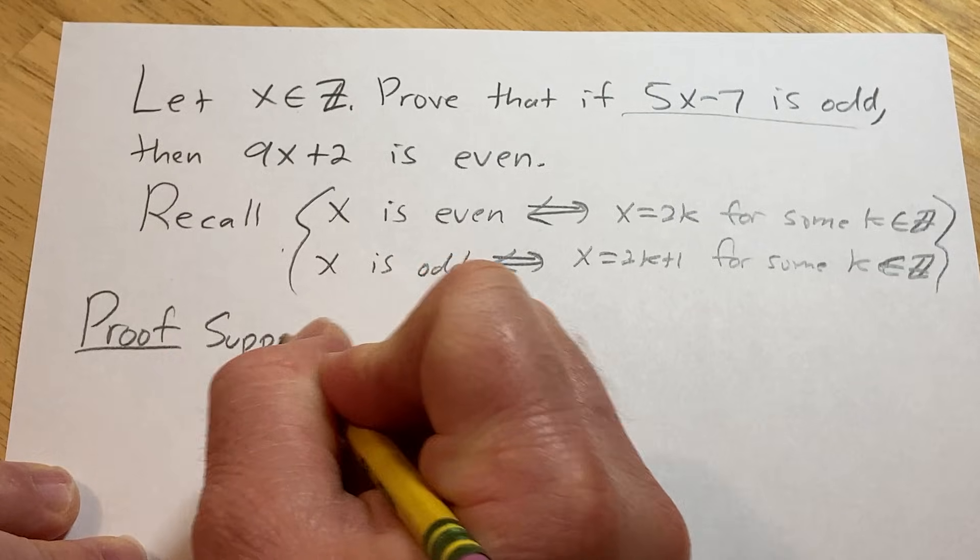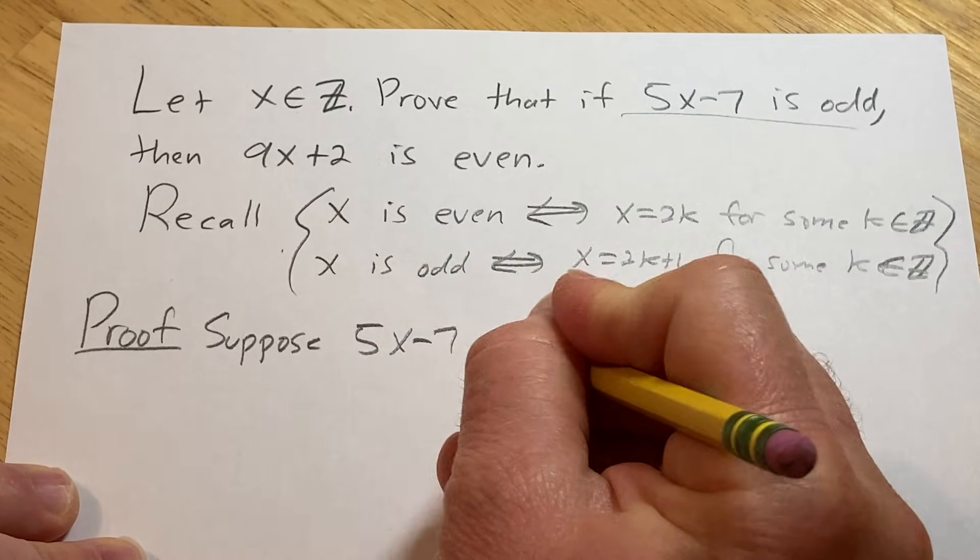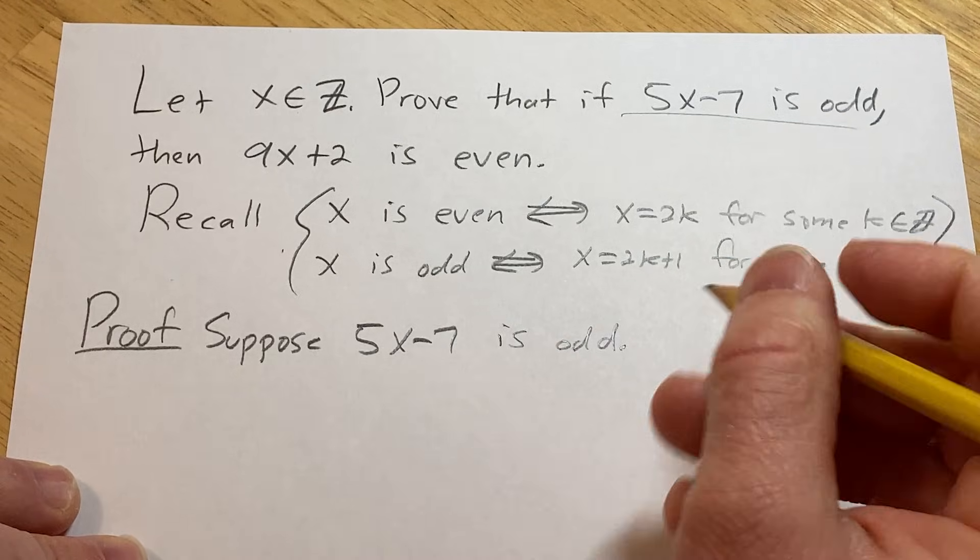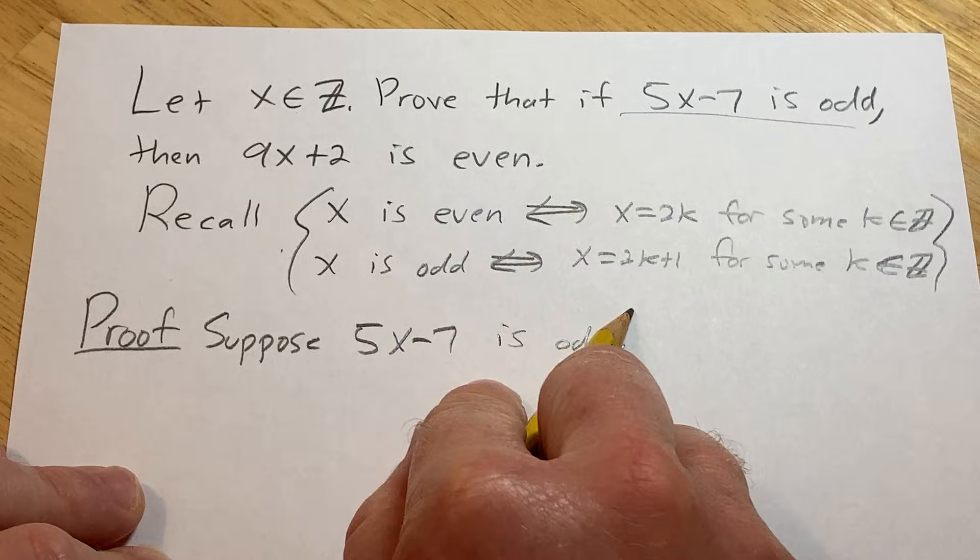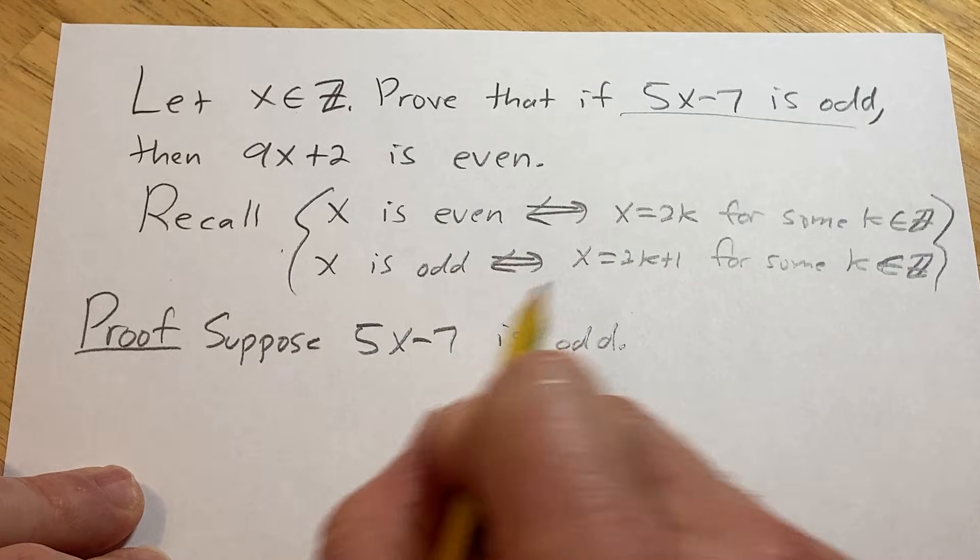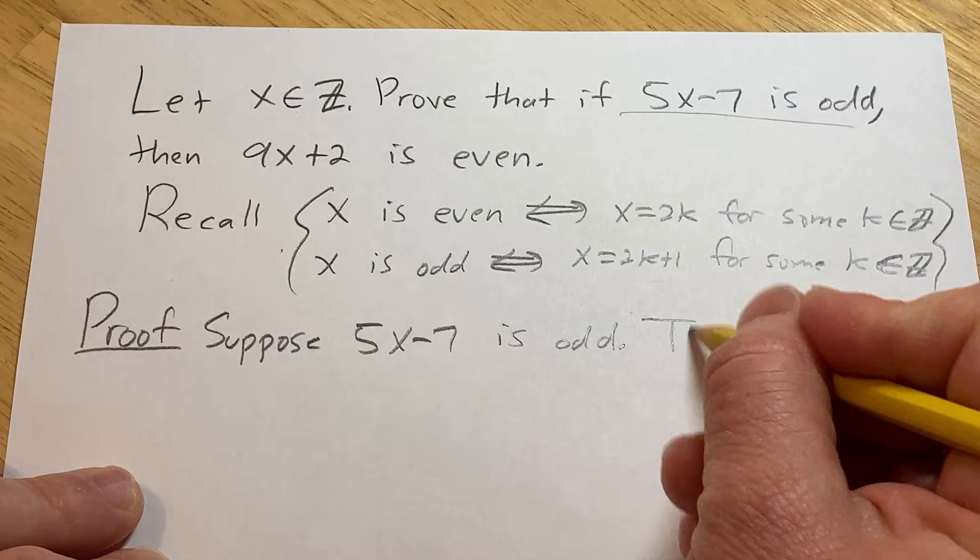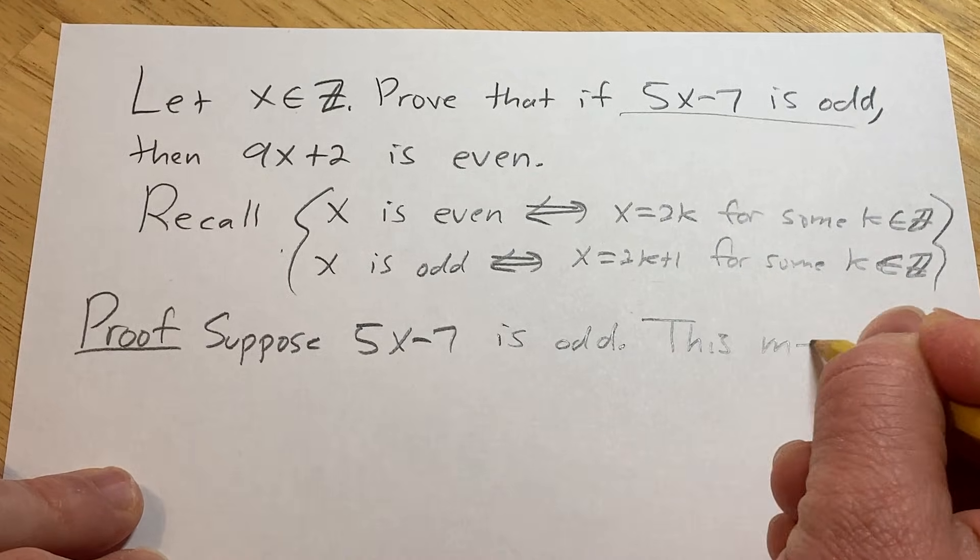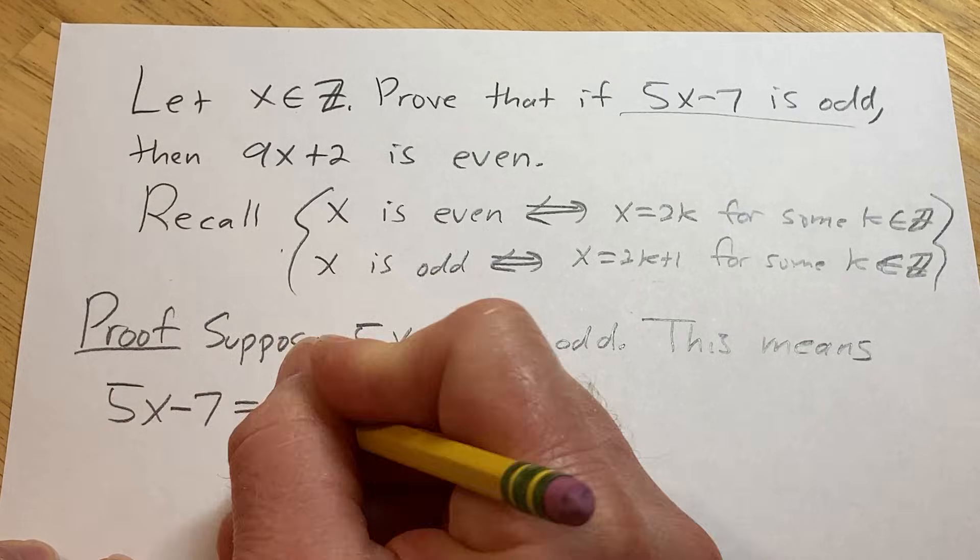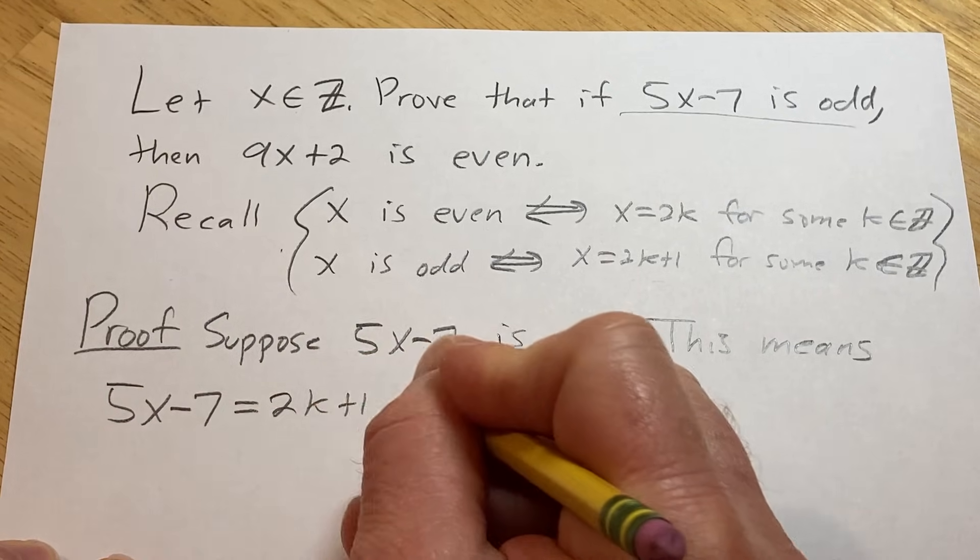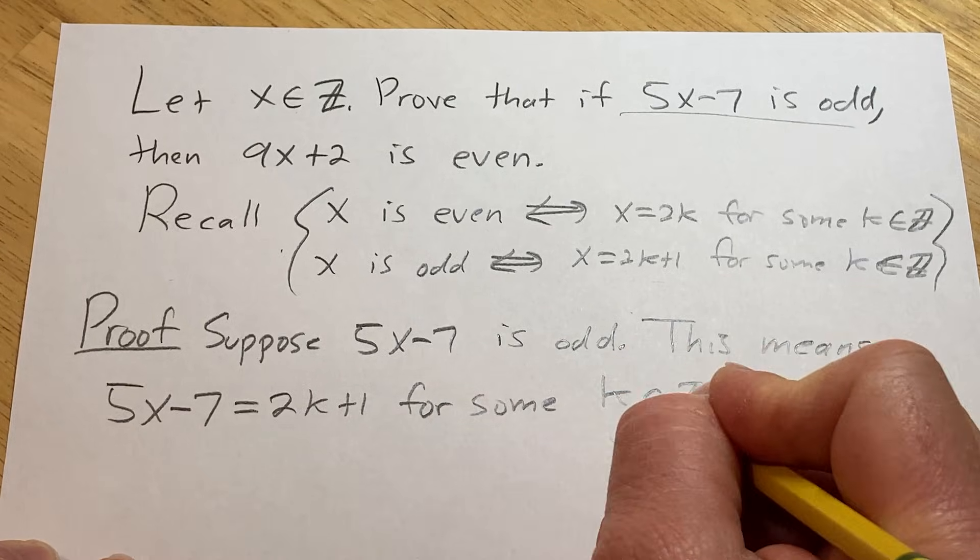So you start by writing down your assumption. So you say suppose 5x minus 7 is odd. And then typically in these problems what you do is you write down what it means. What does your assumption mean? So what does it mean to be odd? Well, it means we can write it as 2k plus 1 for some k in Z. So this means 5x minus 7 is equal to 2k plus 1 for some k in the set of integers.